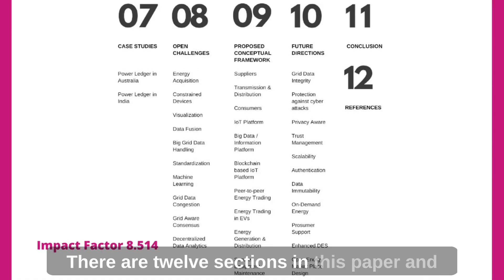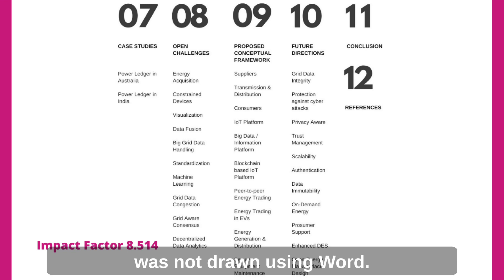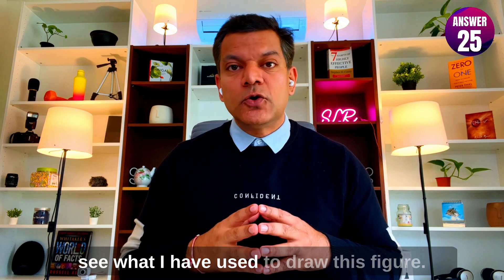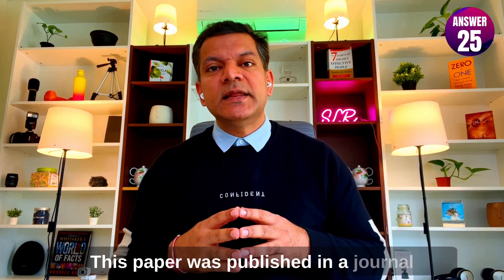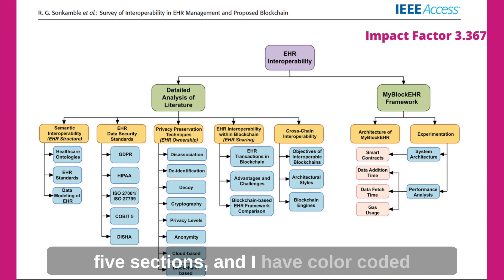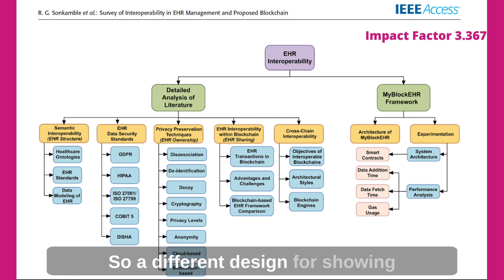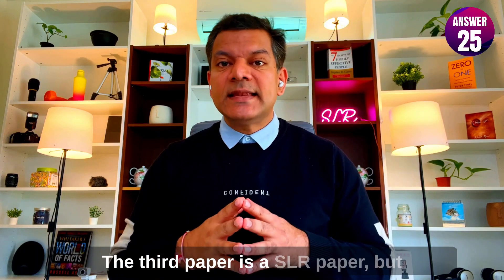There are 12 sections in this paper and each subsection is clearly shown in this figure. You will notice that this figure was not drawn using Word, so do check out the description to see what I used to draw it. Now let's move on to the second example. This paper was published in a journal with an impact factor of 3.367. The paper has five sections and I have color coded these sections in different colors — a different design for showing the structure of your SLR paper, which is a little bit more colorful.